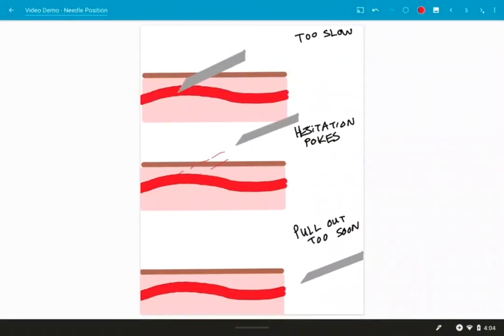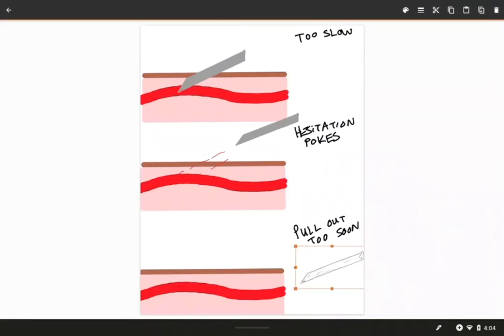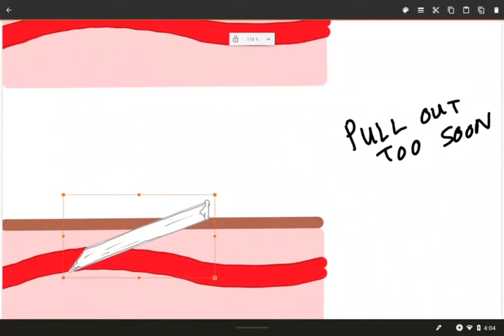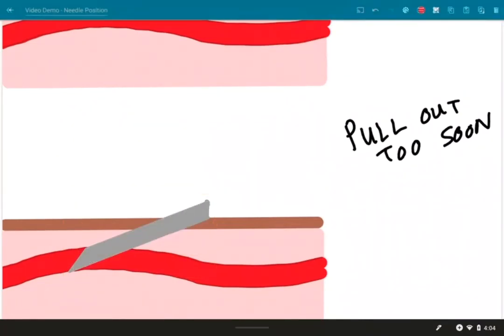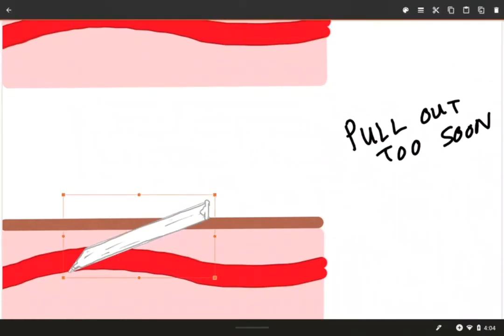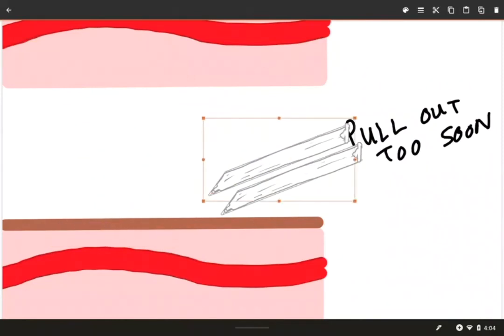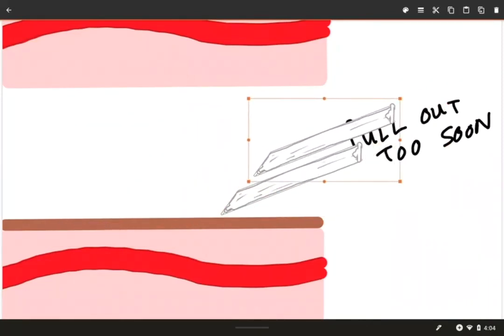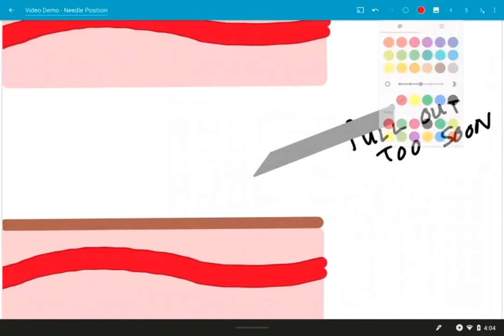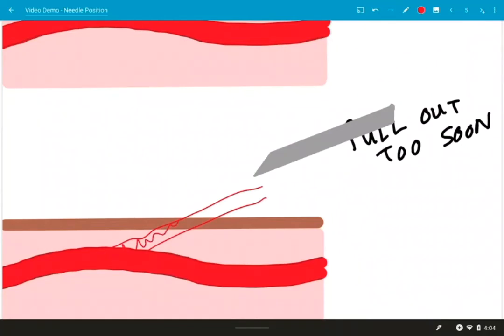Now when you pull out too soon, you're going to have similar results as creating hesitation pokes. Let's say you are successfully collecting blood. Your needle is where it needs to be. It's at the correct angle. It's at the correct depth, but in the middle of the tube exchange or something, you accidentally jerk the needle back. Not only are you going to risk repoking them again and it being painful, you're creating another wound that allows the blood to escape to the outside and escape to the inner tissues.